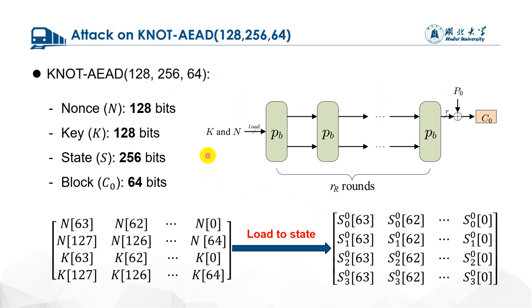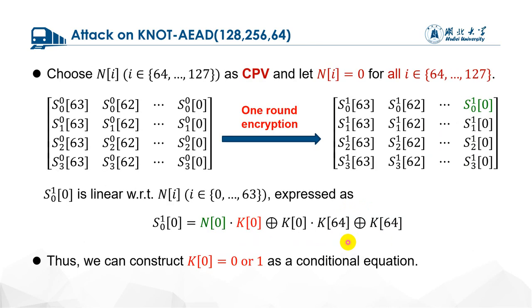Here we only focus on the primary version of the KNOT-AEAD to illustrate our conditional cube attack. For this version, the nonce and key are 128 bits, and the internal state is 256 bits. The block is 64 bits. The initial state is loaded by nonce and key, and the internal state can be represented as a 4×64 array. S denotes the state, and the upper index denotes the round. The lower index denotes the row.